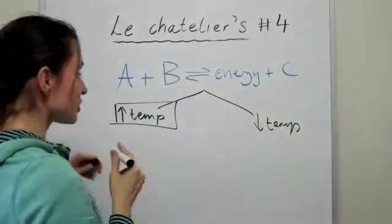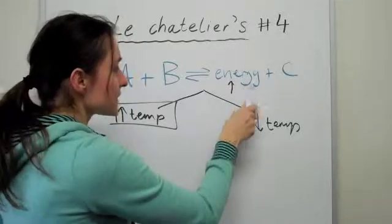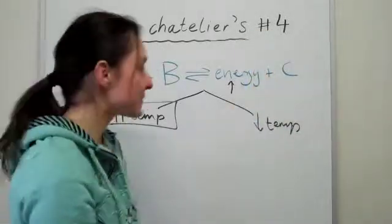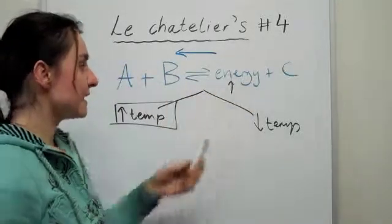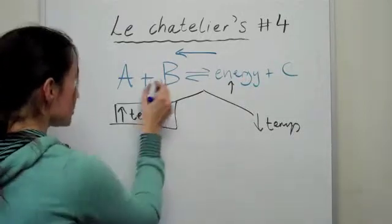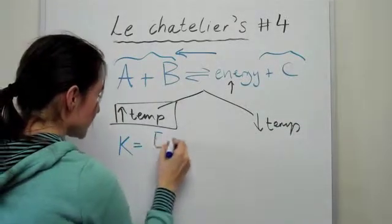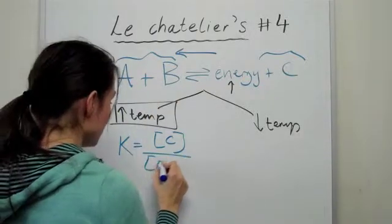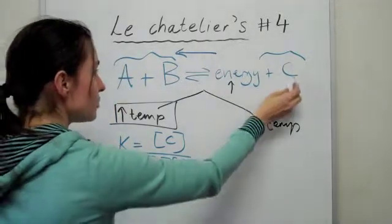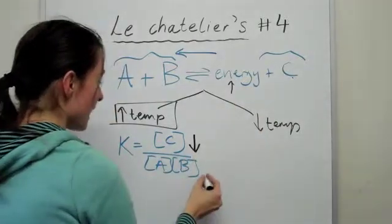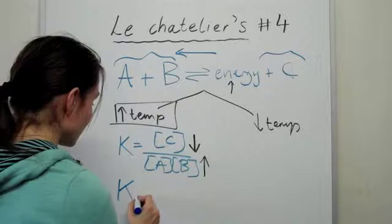So when you decide to increase the temperature of this particular system, the energy is actually going to increase. And if that energy increases, it has to be brought back down via Le Chatelier's principle. So in actual fact, the reaction will move that way because that's the only way that you can use up this energy. And go backwards. So basically, you're going to generate more reactants and you're going to use up your product. And so the KC value, which is now going to be concentration of C divided by concentration of A times concentration of B, your K value is going to change because you're using up C, so C is going to go down and A and B are going to go back up. And you'll find that KC actually decreases.